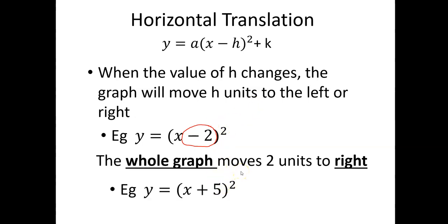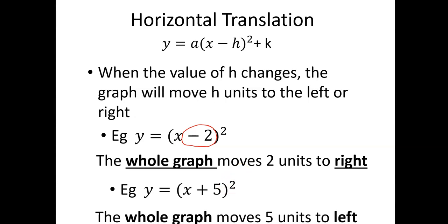In the graph of y is equal to x plus 5 squared, the whole graph will move 5 units to the left. Again, the plus 5 here might make you think that it's going to move to the right, but it moves in the opposite direction — it moves 5 units to the left.